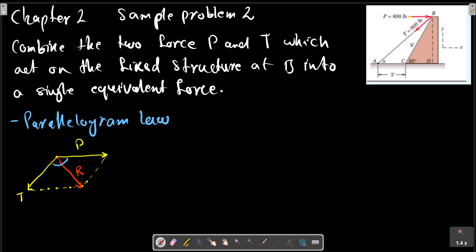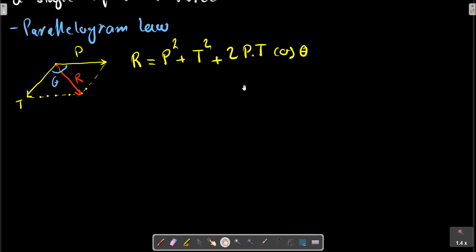If this angle is theta, we can write R² = P² + T² + 2PT cos θ. We should calculate first cos theta.